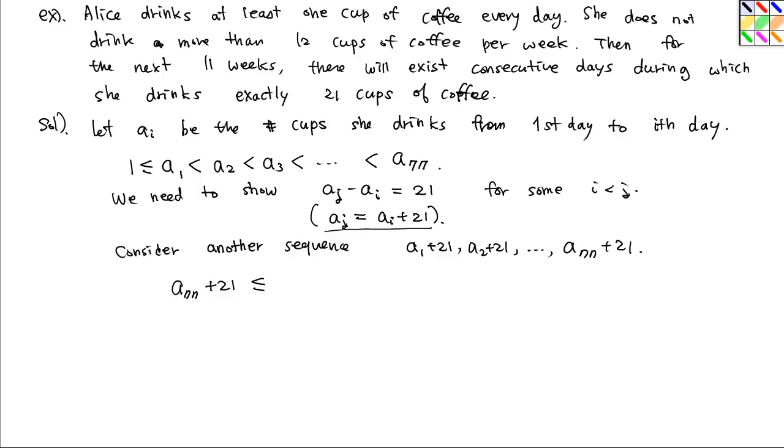Then what happens is that we know that a77 + 21 is less than or equal to... Alice does not drink more than 12 cups of coffee per week. That means for 11 weeks, the maximum is 11 × 12 + 21 = 153.